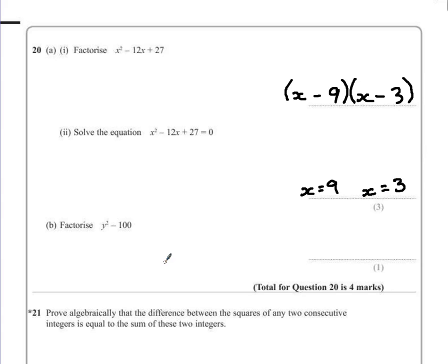Part B says factorize y squared subtract 100. Now there's no multiple of y in the middle there, so this one becomes again a very easy one if you can remember the pattern.